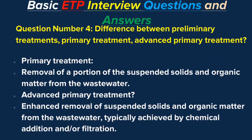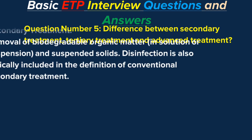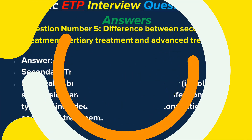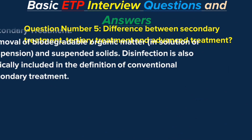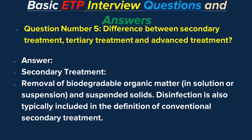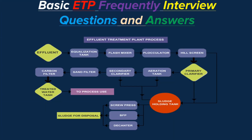Question number 5: Difference between Secondary Treatment, Tertiary Treatment, and Advanced Treatment? Answer. Secondary Treatment involves removal of biodegradable organic matter in solution or suspension, and suspended solids. Disinfection is also typically included in the definition of conventional secondary treatment.